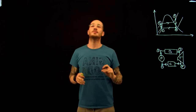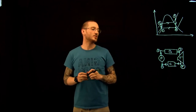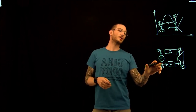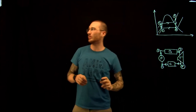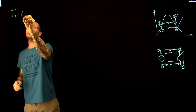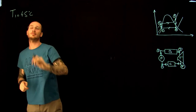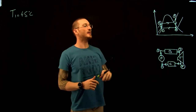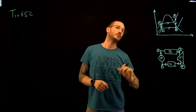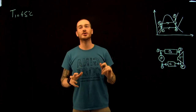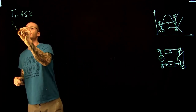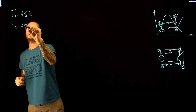Now let's look at what's been given. The temperature at the exit of the condenser is 45°C, so the exit of the condenser is at point one — T₁ = 45°C. The pressure at the exit of the boiler, at point three, is 4 MPa, so P₃ = 4 MPa.